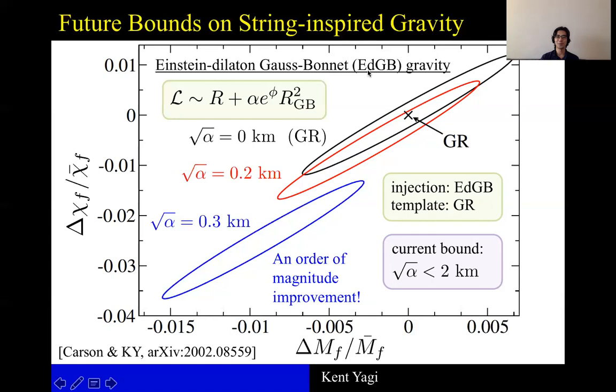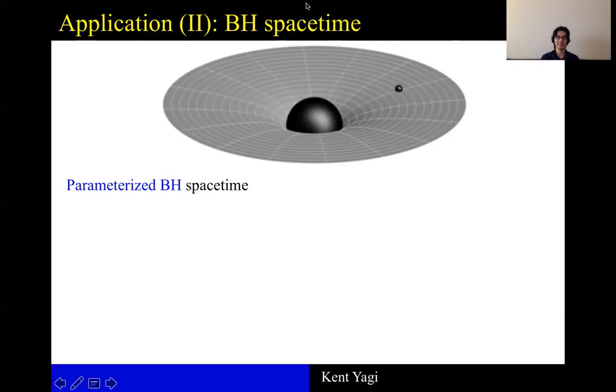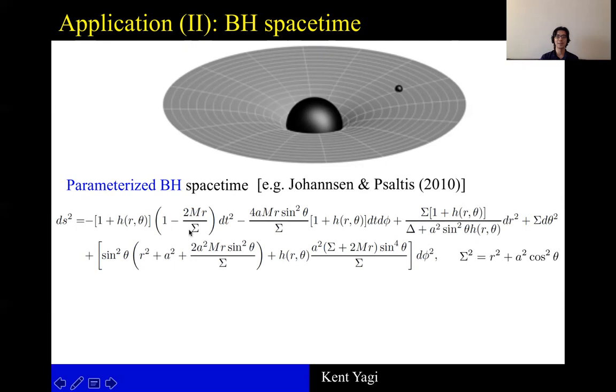There's another application that we considered, which is to probe black hole spacetime. And one way is to use the parameterized black hole spacetime. For example, Johannsen and Psaltis proposed this kind of metric, which looks a bit messy, but there's only one arbitrary function h. And if you set h to 0, then you reduce to Kerr black hole.